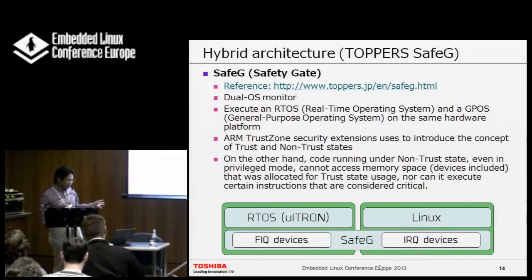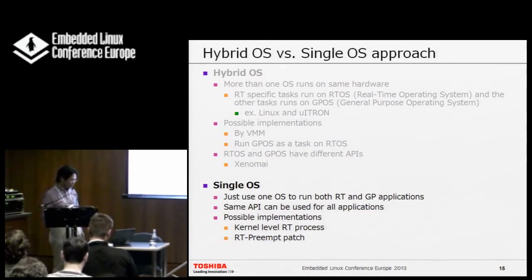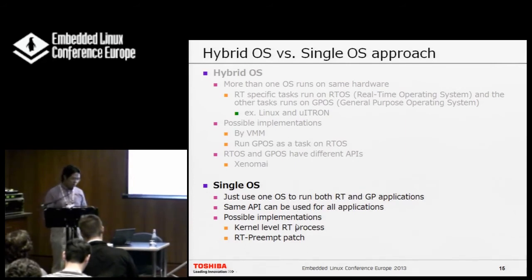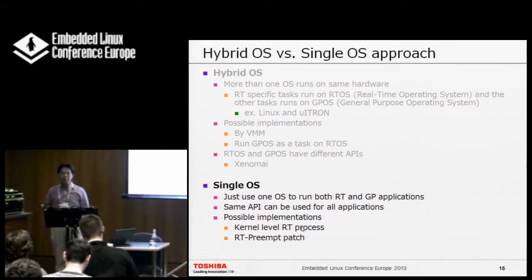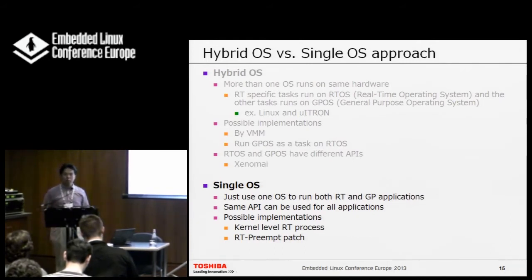Safe-G uses ARM TrustZone architecture, which isolates a trusted world and non-trusted world. In that case, the real-time OS runs in the trusted world and only uses FIQ (fast IRQ) devices, while the general-purpose OS uses IRQ devices. However, this is architecture-dependent because ARM is required.